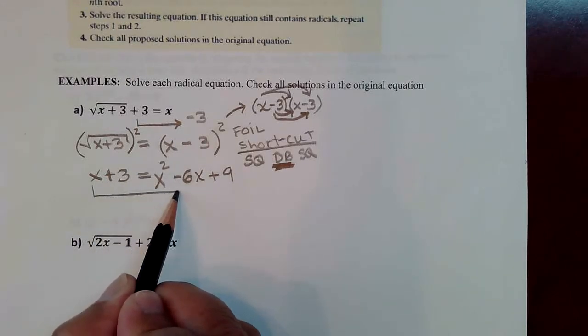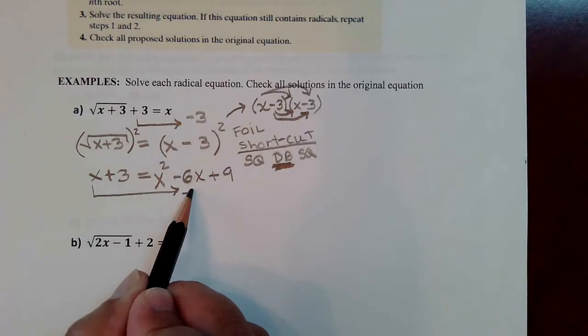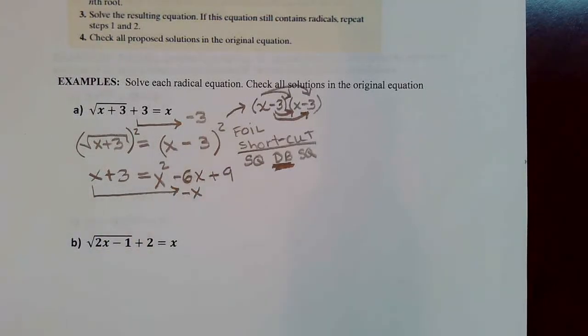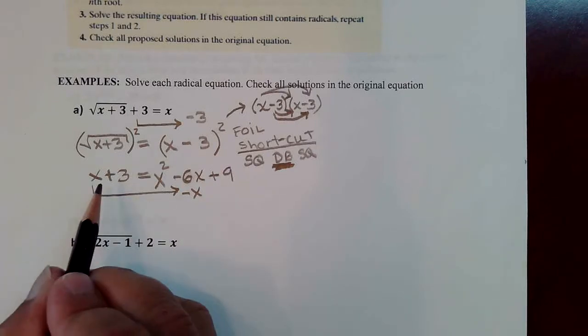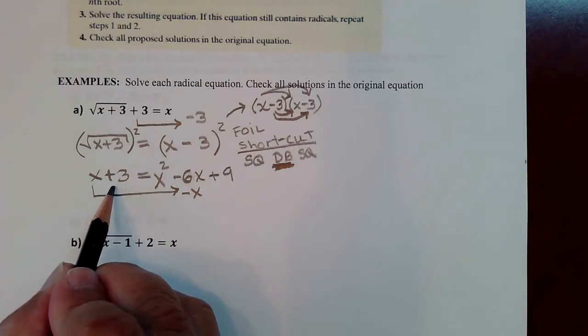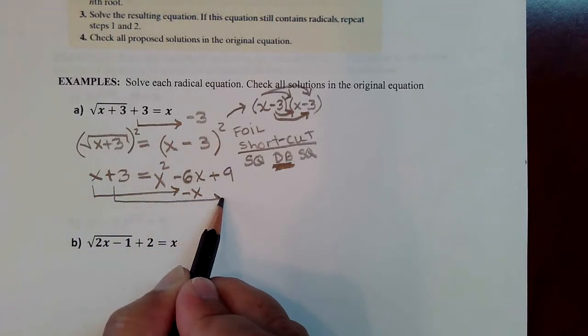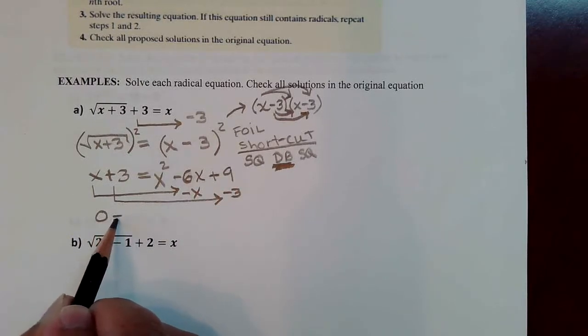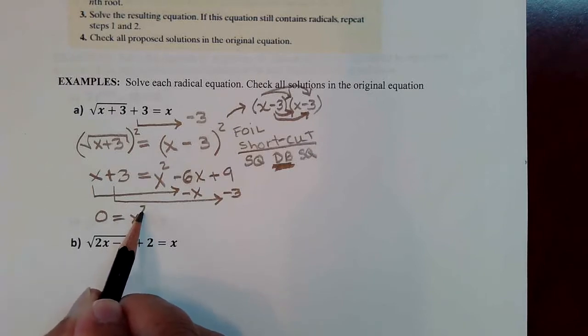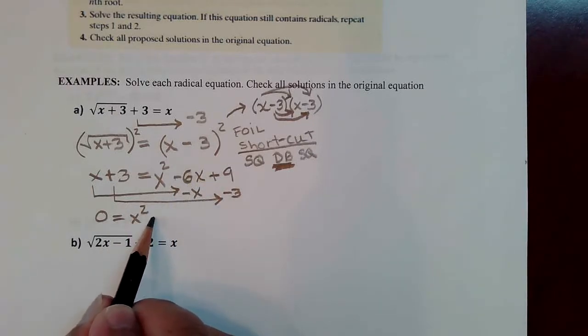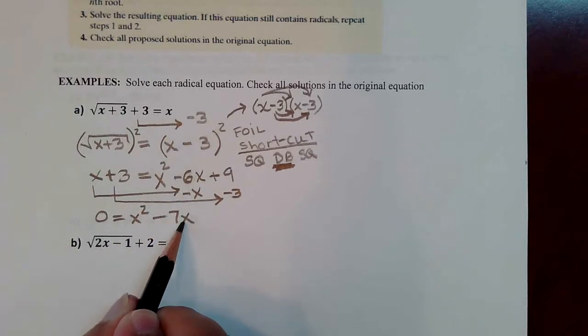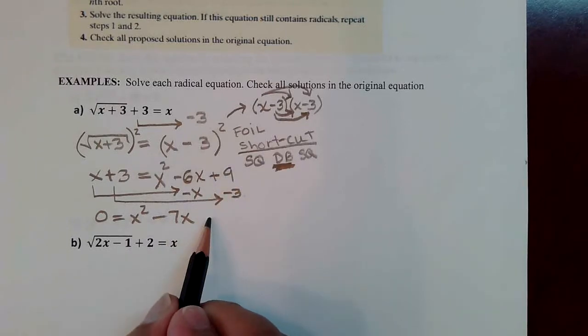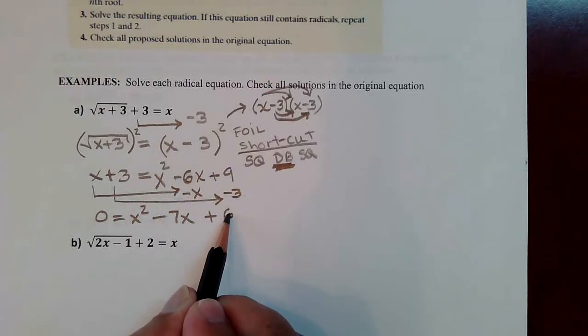If you bring all the terms to one side, that positive x would become negative x. That's like subtracting x from both sides. And the 3 would come over and be a negative 3. So then you'd have 0 is equal to x squared. These two combined would be negative 7x, and then 9 take away 3 would be positive 6.